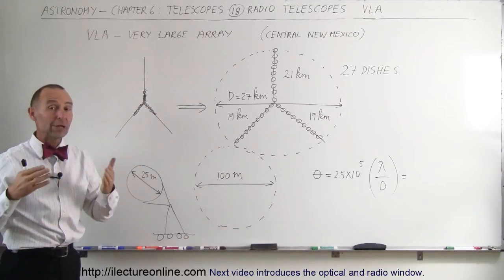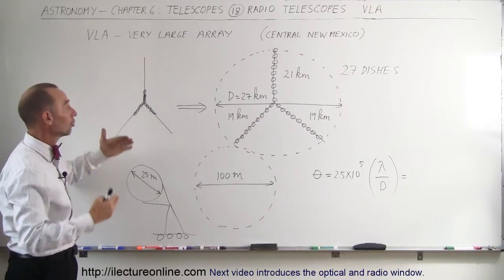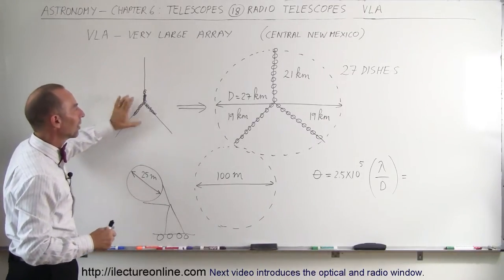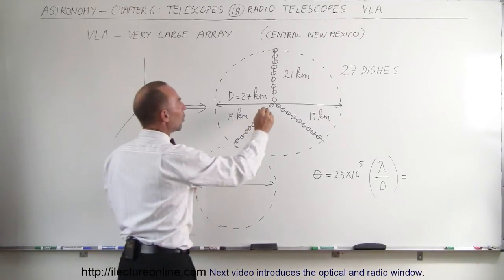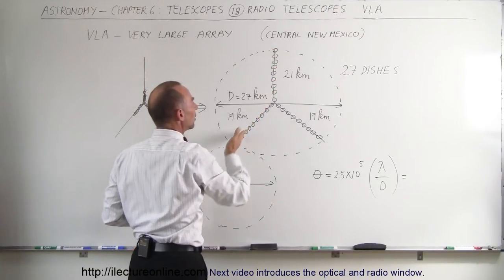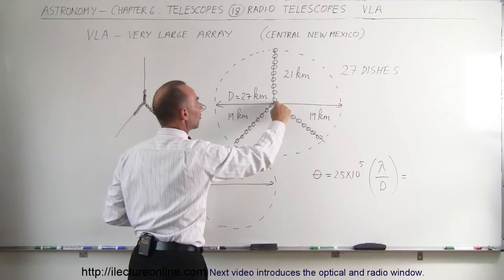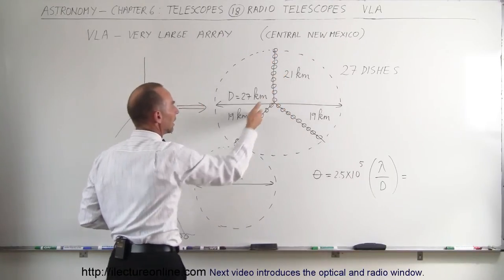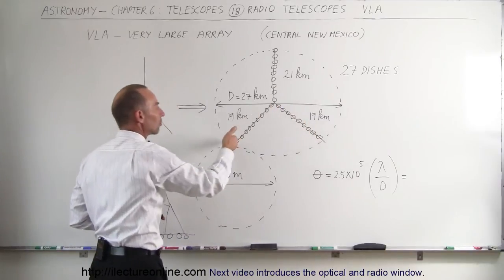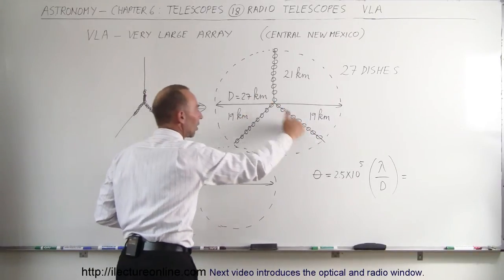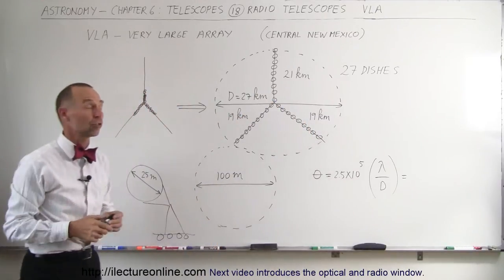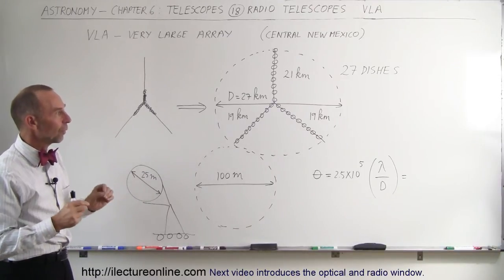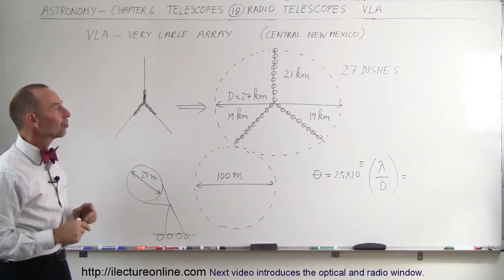So what they would do when they want to do radio astronomy and get large resolution angle, or I should say small resolution angles, they would take these radio telescopes and equally space them out in those three directions. The length from this to the top portion, which is in the northern direction, was 21 kilometers long, and those two legs going in these directions right here, that would be the southwest and the southeast, are each 19 kilometers long, and they would equally space those 27 total dishes or arrays over those large distances.